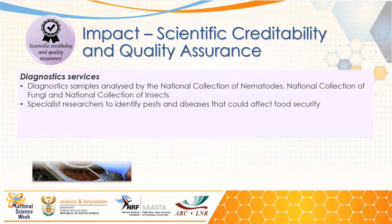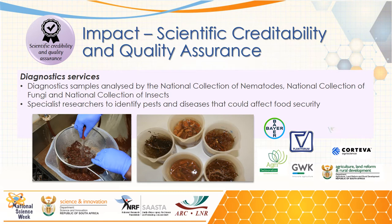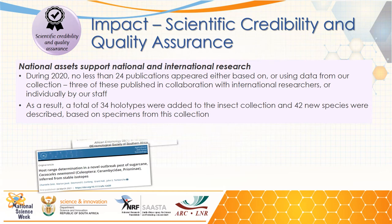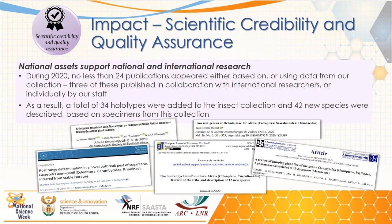The next impact we look at is scientific credibility and quality assurance. The national assets provide support to the diagnostic services offered by the ARC Plant Health and Protection. Specialized staff can identify pests and diseases that can affect food security. These services are then offered to government and industry as well as the farmer. The national assets also support international and national research — specimens and associated data can be used to generate research papers. The natural science collections are used for both biodiversity and taxonomic studies, and can provide foundational data for climate change studies and modeling.